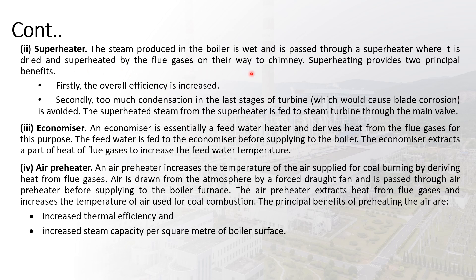The steam produced in the boiler is wet and is passed through a superheater where it is dried and superheated by the flue gases. The superheating provides two principal benefits: overall efficiency is increased, and too much condensation in the last two stages of the turbine — which causes blade corrosion — can be avoided.